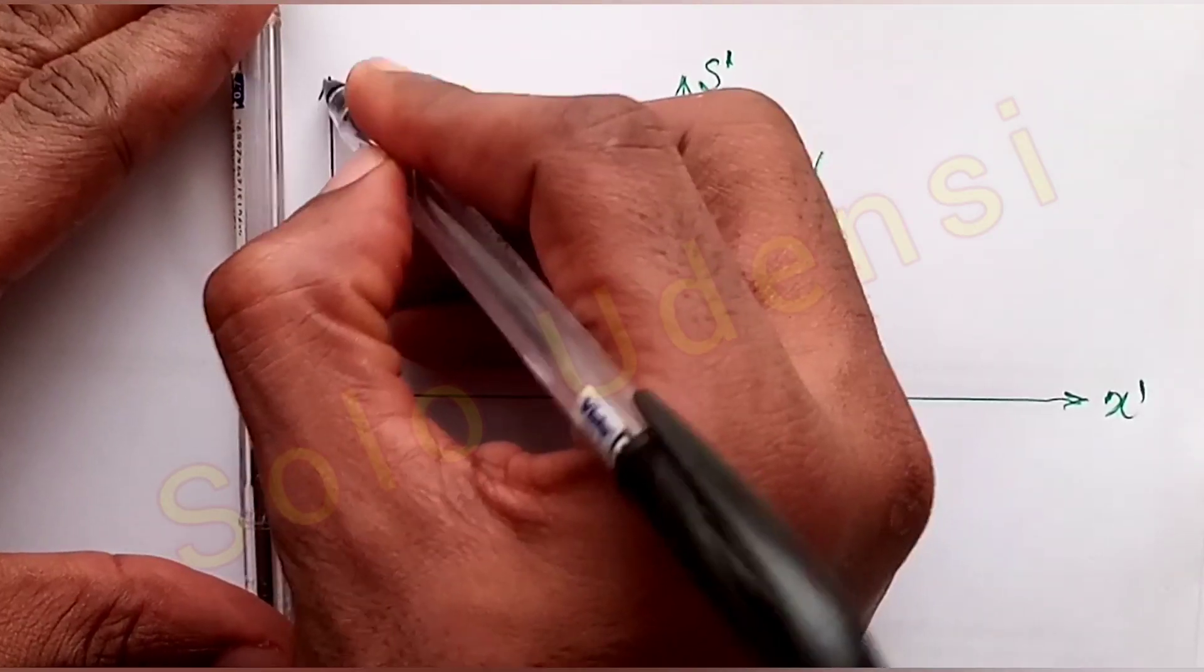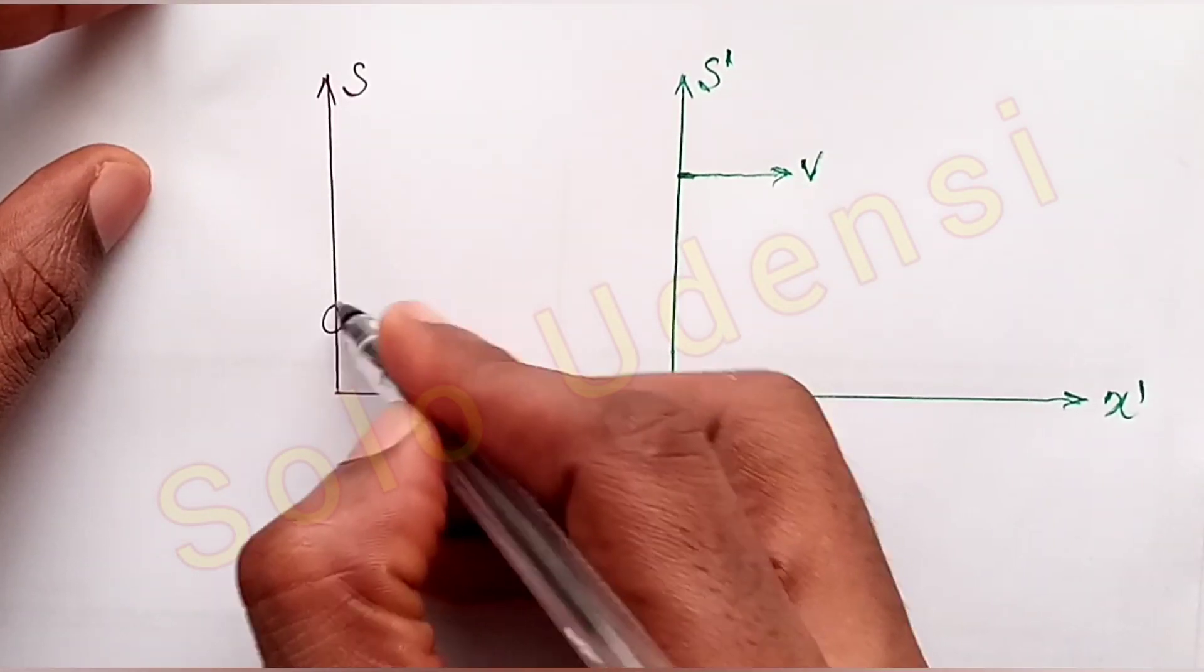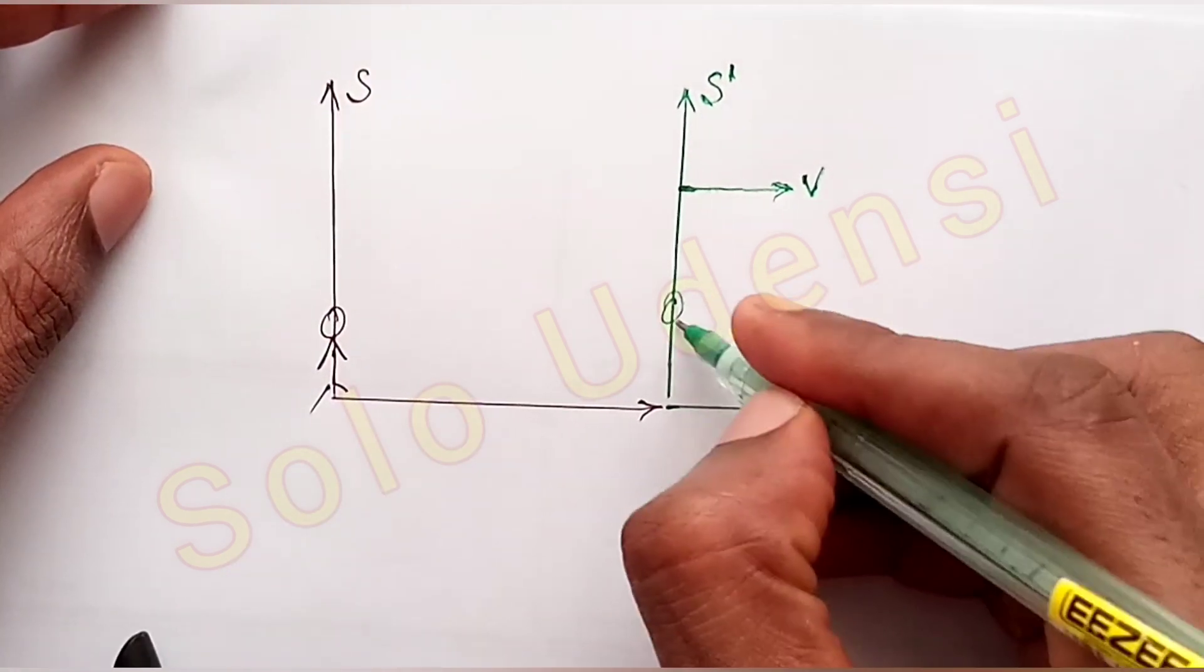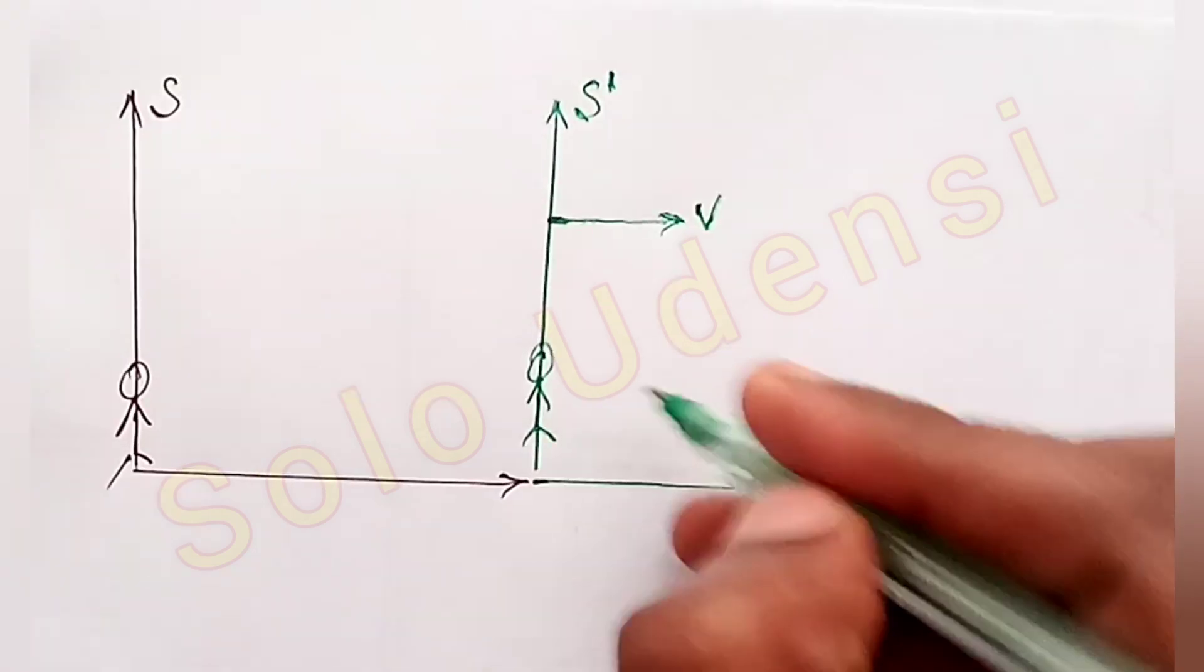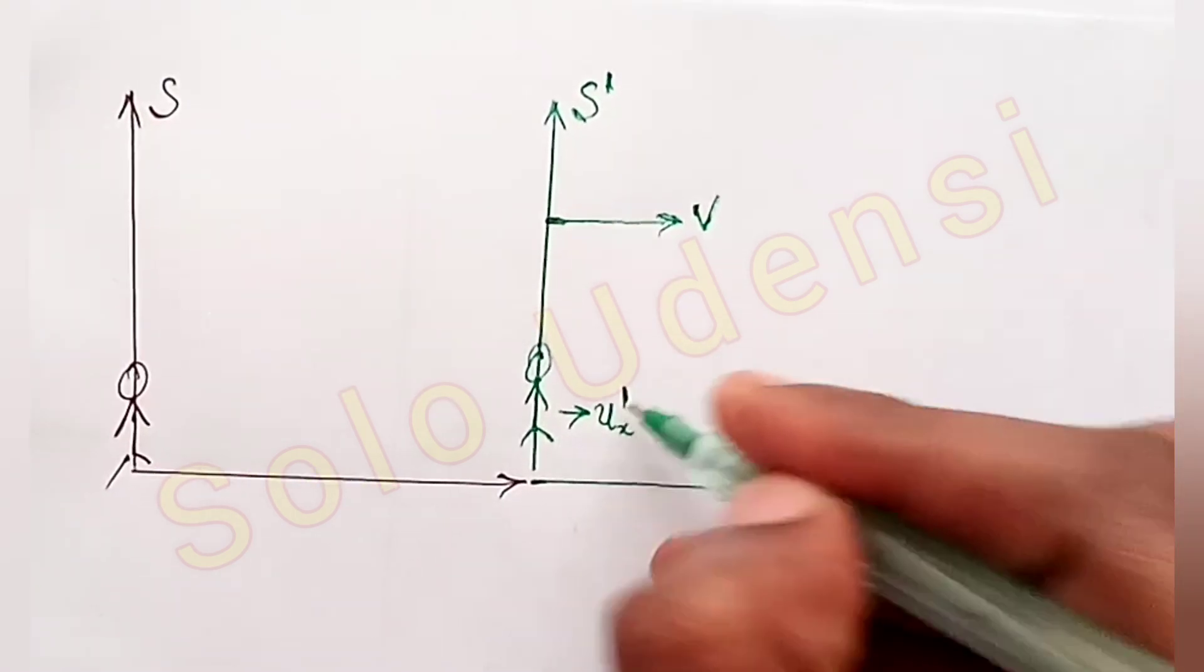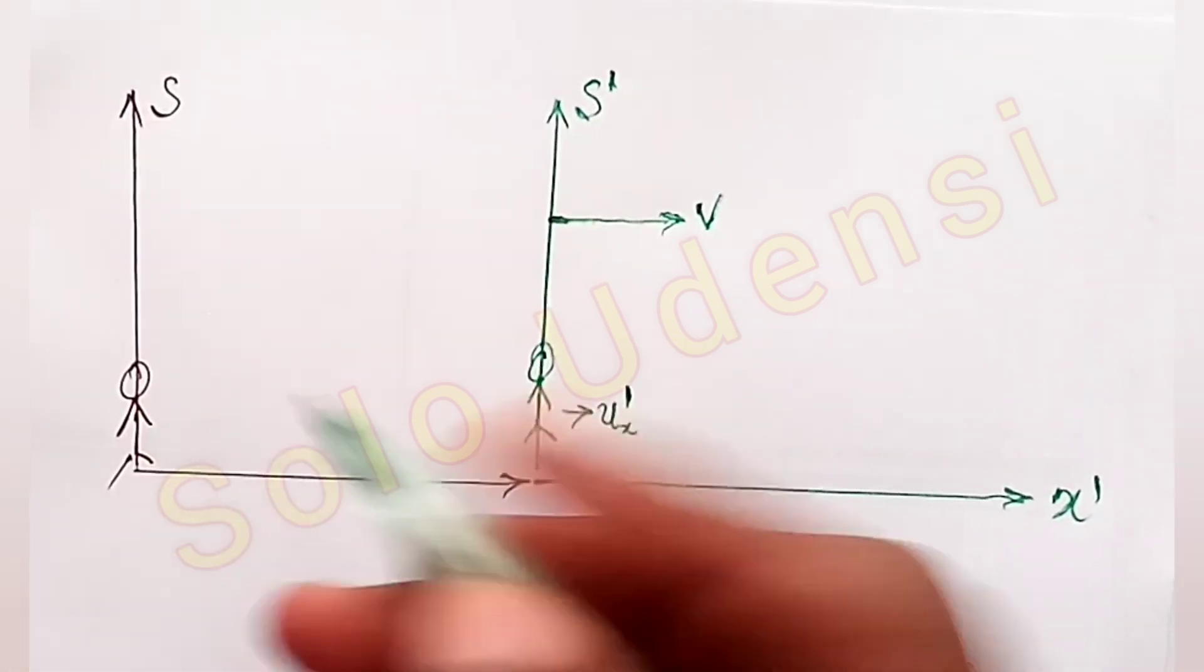This is X'. This is ground. The observer is situated here. While in the bus, the observer is here walking to the front with velocity Ux'. This one, velocity Ux, is equal to zero.